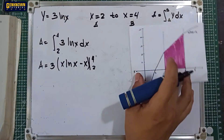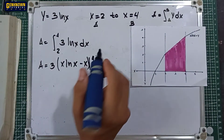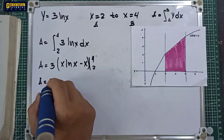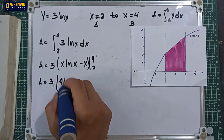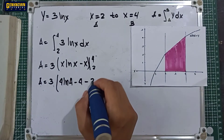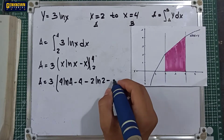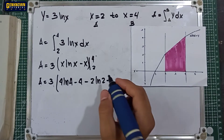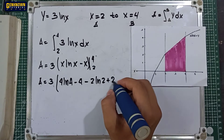Next, we distribute the limits. The area is equal to 3 multiplied by (4 ln 4 minus 4) minus (2 ln 2 minus 2). The negative multiplied by negative becomes positive, so we get plus 2.